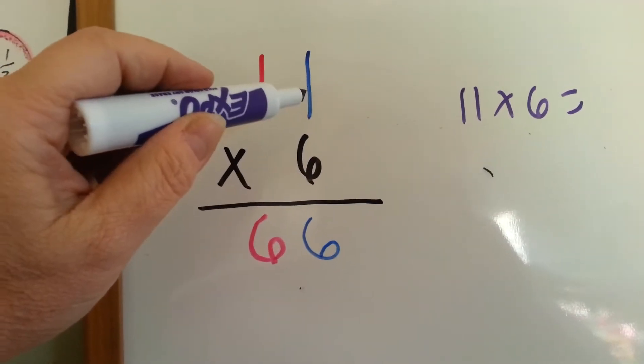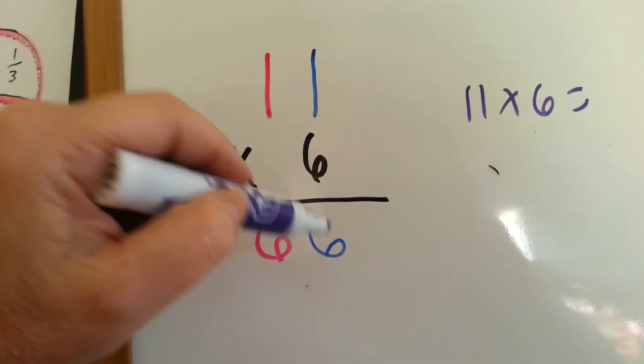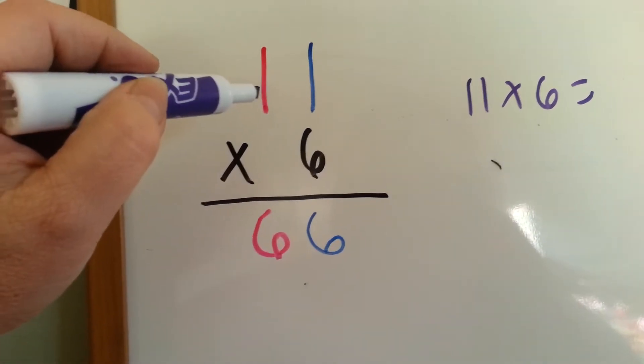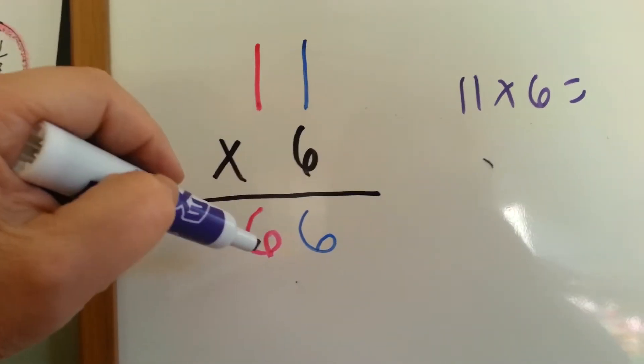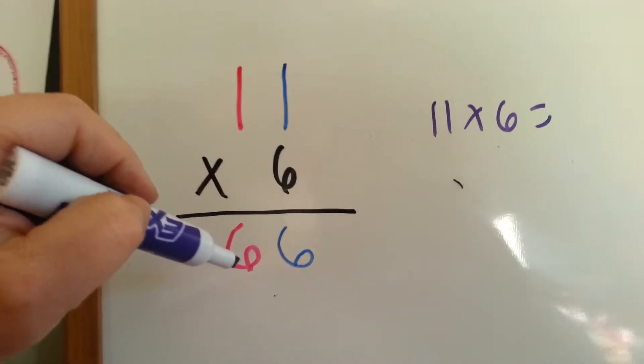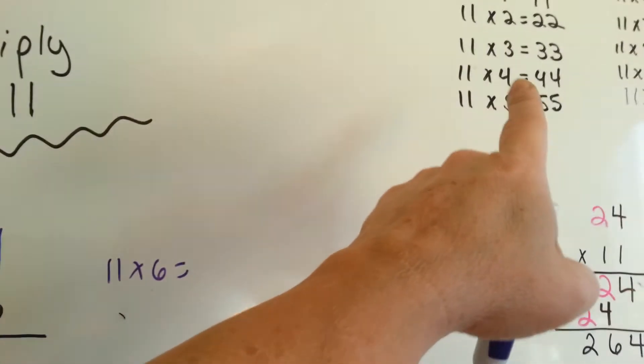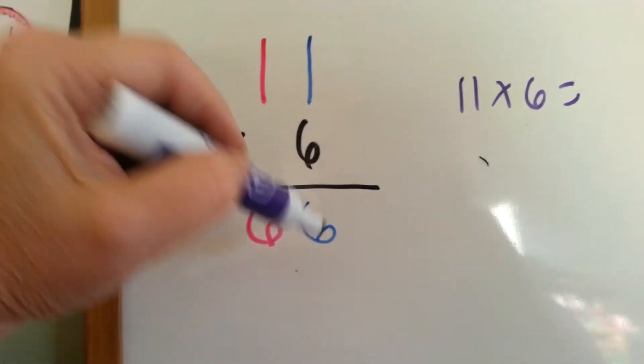And you can see I multiplied the blue one, and that's why that answer is blue. Then 6 times 1 over here is 6, so our answer is 66, which we know from up here that any number you multiply it by is going to be that number 2 times, right? A 6 will be 66.